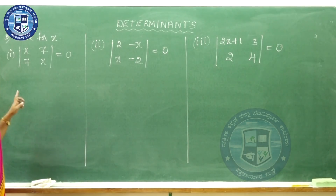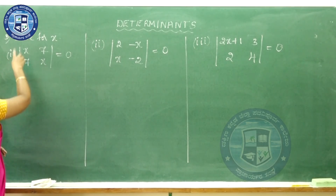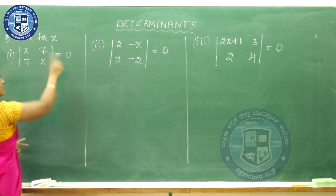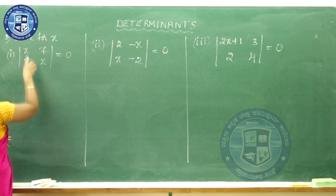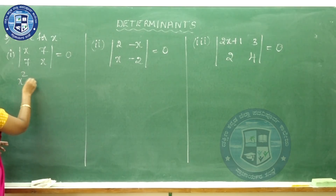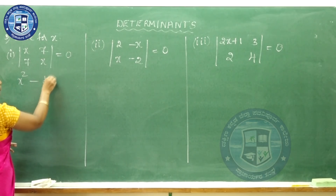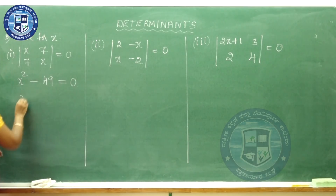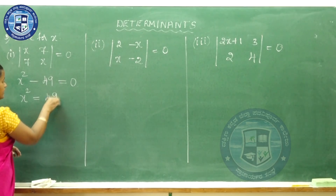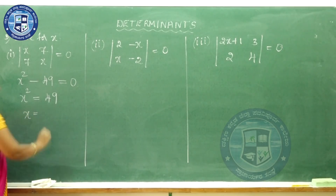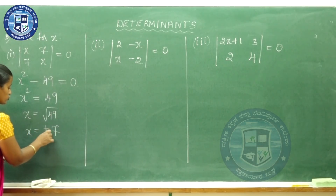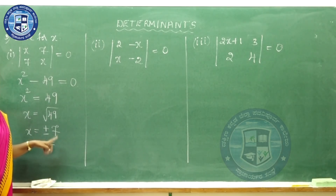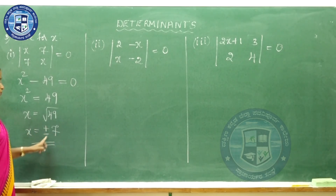Third question: solve for x. The determinant of [x, 7; 7, x] equals 0. So x into x is x² minus 7 into 7 is 49, equal to 0. So x² equals 49, therefore x equals square root of 49, which is plus or minus 7. You need to write both plus or minus 7, otherwise you will lose one mark.